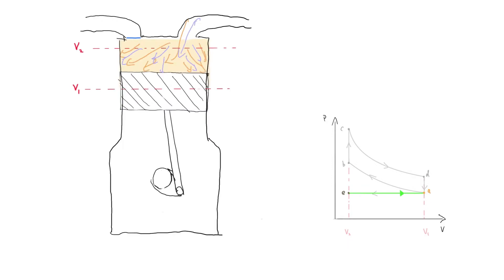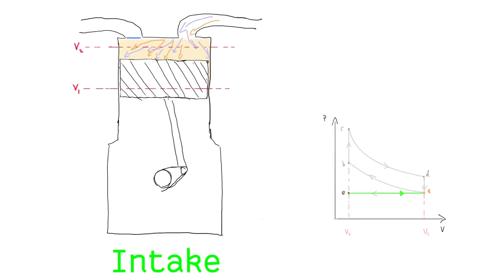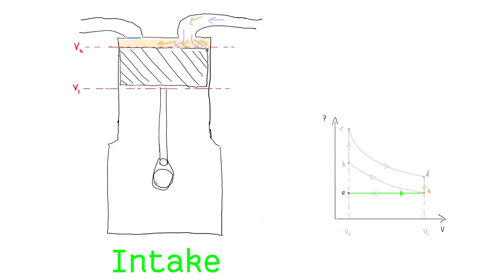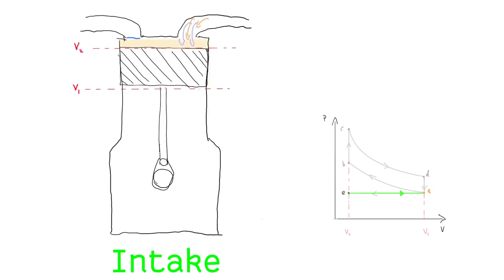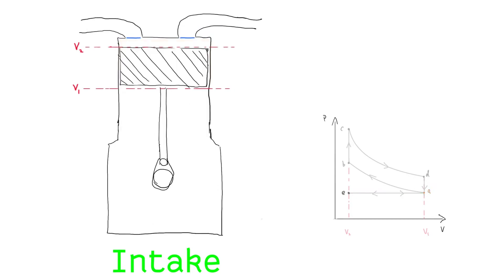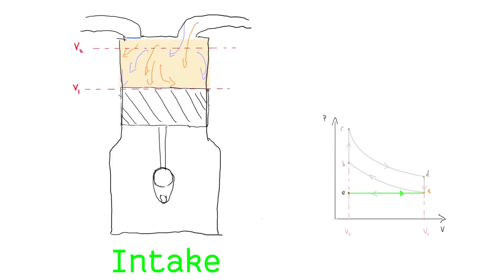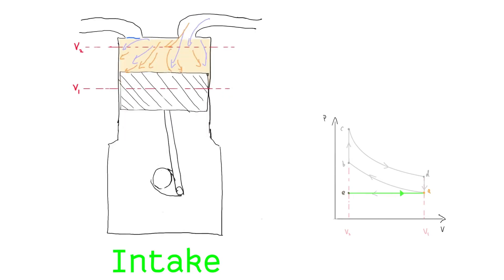We will use a PV diagram to keep track of the state of the gas inside the cylinder. The first stroke is the intake stroke. It begins with the piston fully extended. The intake valve is opened and a fuel-air mixture flows into the cylinder as the piston retracts. This is a constant pressure process as the cylinder is open to the atmosphere.